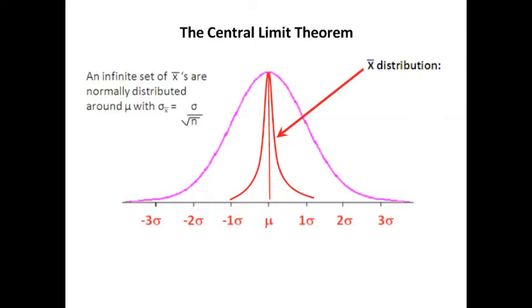What that means is the more numbers that we include in our samples, the bigger our samples get, the tighter our x̄'s hover around μ. And eventually, the idea being that if you had the whole population, your x̄ would be μ.